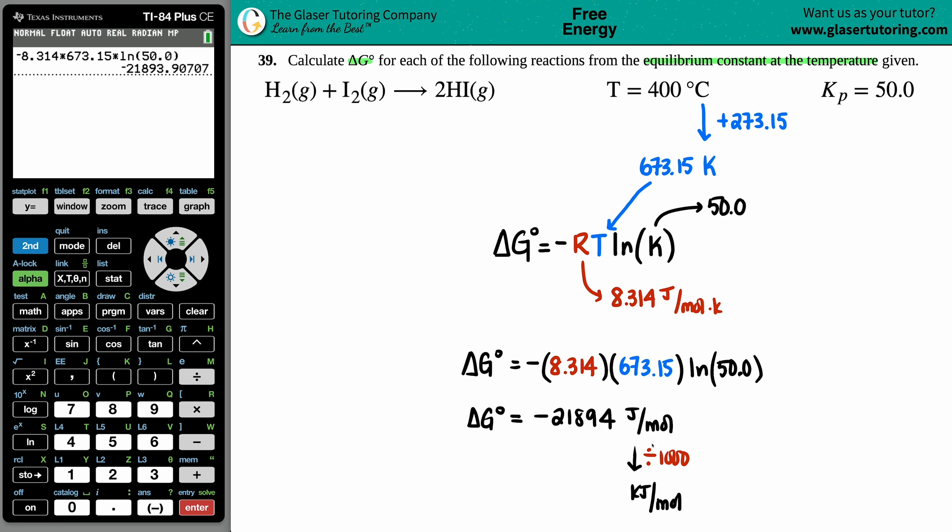So I'll take this value, divide it by one thousand, and now I'm going to put my correct sig figs on there. Between the temperature that we used and the Kp, this had the lowest number—it had three sig figs. So technically my answer should only have three sig figs. I'm going to say negative, it's spontaneous, 21.9 kilojoules per mole, final answer. And that's it.